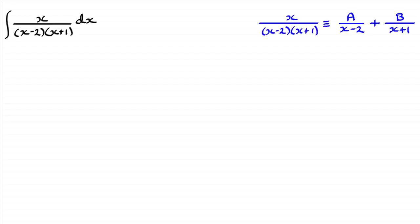So, taking x over (x-2)(x+1) here, if you have linear factors in your denominator, then it's going to lead to partial fractions of the form A/(x-2) + B/(x+1), where A and B are constants. Okay, and we've got to find these constants. And to do this, what we do is multiply both sides of this identity by the denominator here, (x-2)(x+1).